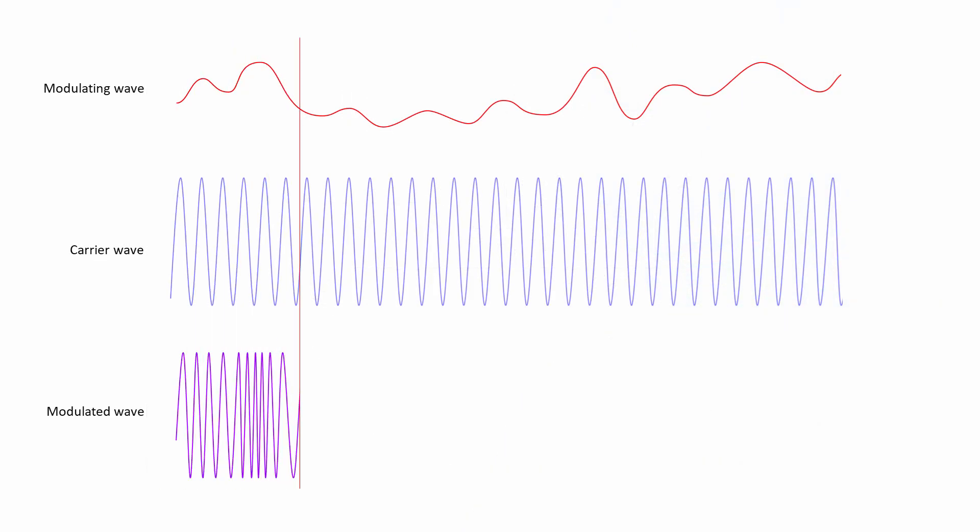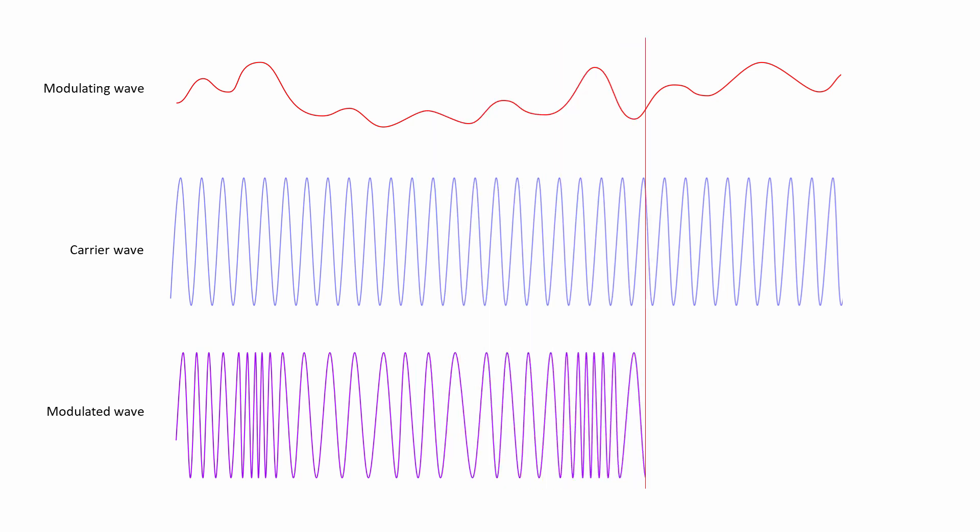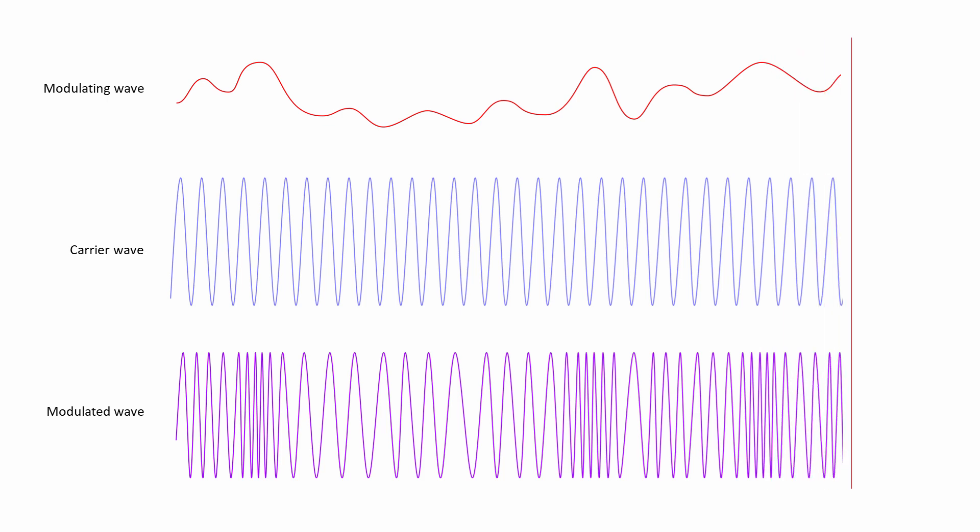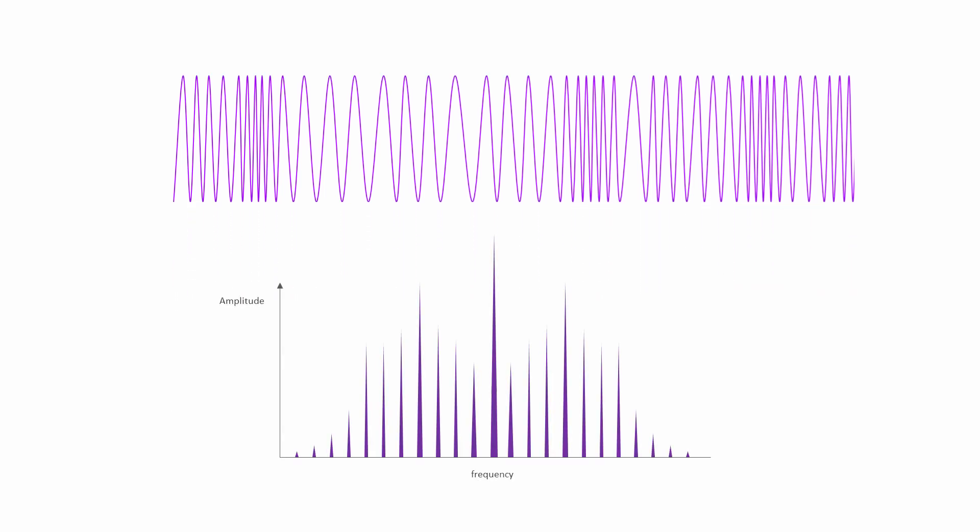With frequency modulation, or FM for short, the frequency of the carrier is adjusted according to the amplitude of the modulating wave. This means a frequency modulated wave is less vulnerable to anything that might cause the amplitude to change. This is what a typical FM wave would look like in the frequency domain. As you can see, a frequency modulated wave occupies a considerably wider range of frequencies, which typically might vary by as much as 150 kilohertz. This is why the quality of the information transmitted by FM is so much better.